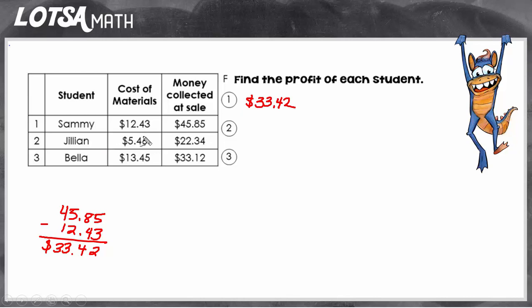So let's look at number two. Jillian only spent $5.46 making something, but she collected $22.34. So we're just going to take the amount that she collected from her sale and subtract the amount she spent creating her product that she sold. And we see that she still has $16.88. So her profit is $16.88.